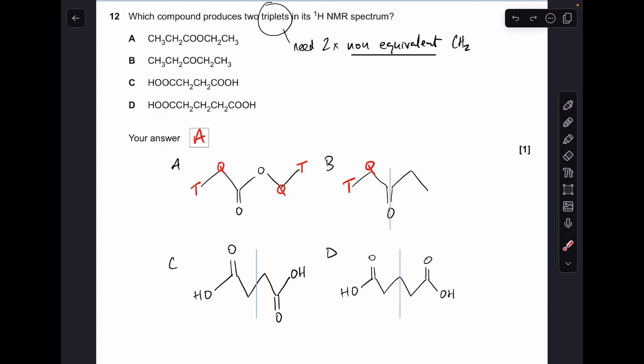Moving on to C. I'm only going to consider these environments here because of the line of symmetry. It means that this side is identical to this side. So the carboxyl proton will be a singlet. They're always singlets. And this CH2 group is not going to be split by the adjacent CH2 group because it's equivalent. So we'll have another singlet there.